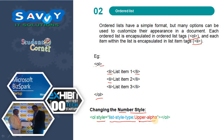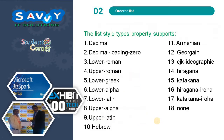The list-style-type is an attribute whose values include: decimal, decimal-leading-zero, lower-roman, upper-roman, lower-greek, lower-alpha, lower-latin, upper-alpha, upper-latin, and others. Note that some of these are not widely supported in browsers.